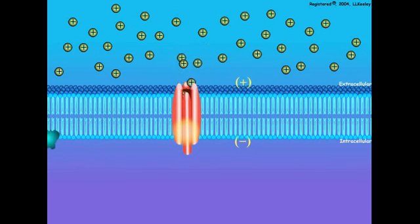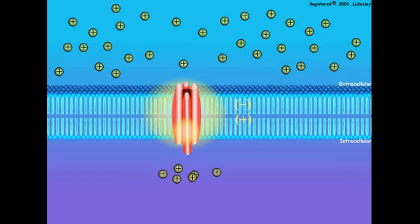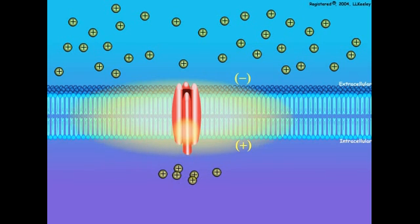Opening the cation channel allows extracellular cations, such as sodium, to enter the cell. The diffusion of sodium into the cell results in a localized depolarization of the cell membrane in the region of the channel. The depolarization spreads across an area of the cell surface.